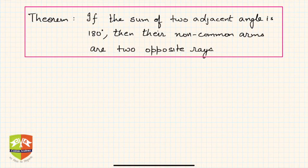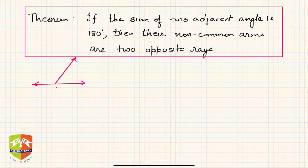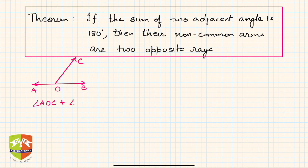Welcome folks. In the previous session we understood that if a ray stands on a line, then the sum of the adjacent angles formed is 180 degrees. If there is a line and a ray stands over it — let's say the points are O, A, B, and C — then angle AOC plus angle COB is equal to 180 degrees. This is what we learned.